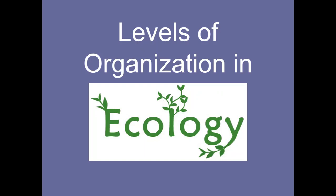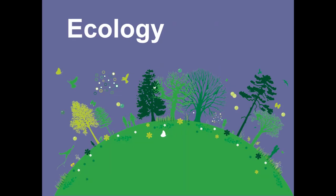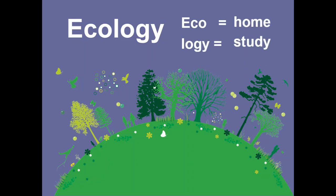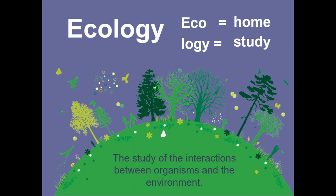In ecology, there are levels of organization. That means we try to take all the parts of ecology and organize them in a way that makes sense — we start small and get larger. First, we have to figure out what the word ecology means. Eco means home, logi means study. So therefore, ecology means the study of our home, which is Earth — the study of the interactions between organisms and the environment they live in.